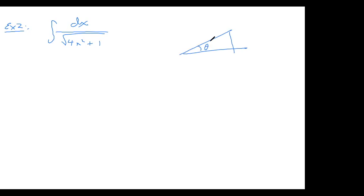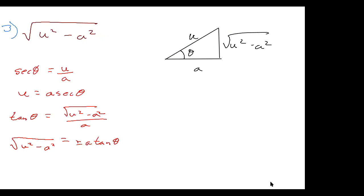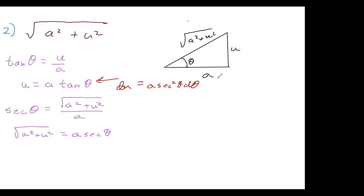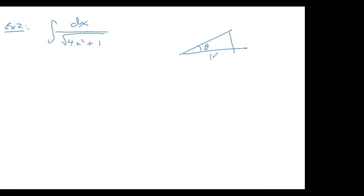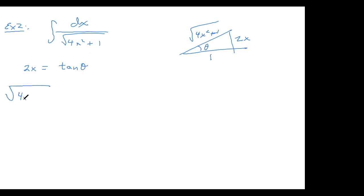We label the triangle with a on the adjacent side and u on the opposite side so that tangent gives u = a tan θ. Here u = 2x and a = 1, so 2x = tan θ. The hypotenuse is √(4x²+1), which equals sec θ, so √(4x²+1) = sec θ.